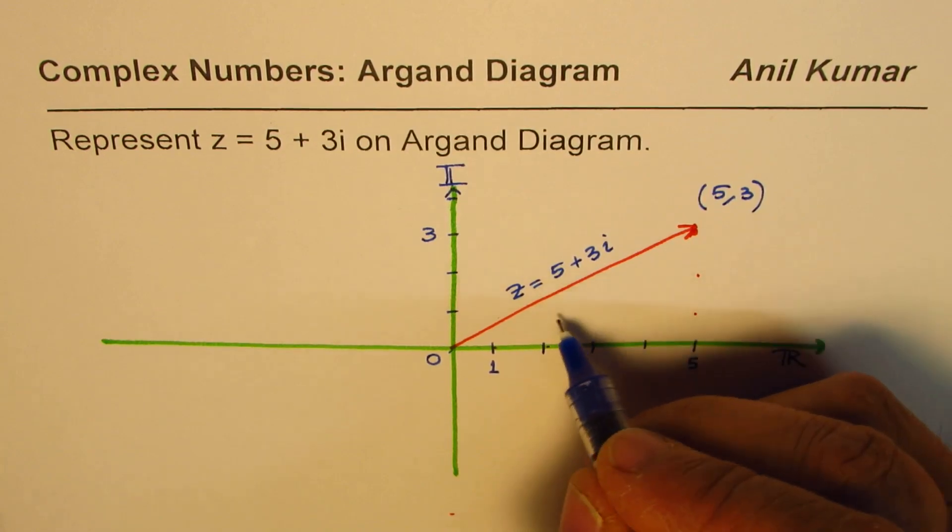This length will be equals to square root of 5 squared plus 3 squared.